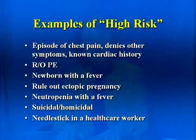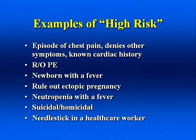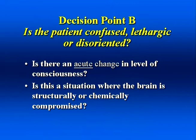This is where the experienced triage nurse is so important. Using their knowledge of anatomy, physiology, pathophysiology, emergency medicine, and their clinical experience, the triage nurse uses critical thinking skills to identify high-risk situations. The determination of high-risk is based on a brief patient interview, gross observations of the patient, or the triage nurse's sixth sense or intuition. Some examples of high-risk situations include the patient with a cardiac history presenting with chest pain who is physiologically stable; rule-out pulmonary embolus in a patient with multiple risk factors; a newborn with a fever; rule-out ectopic pregnancy; neutropenia with a fever; suicidal; homicidal; and a needle stick in a healthcare worker.